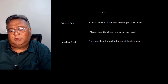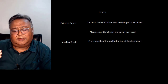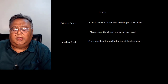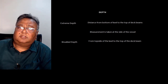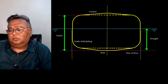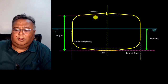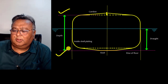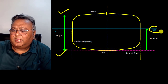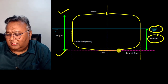Now let's talk about depth. Similar to breadth, we have extreme depth and molded depth — extreme is measured from outside and molded is measured from inside. As shown here, this is the camber, this is the depth, and if this is the waterline then this distance is the draft. If the keel is rising like this, this is called the rise of floor.